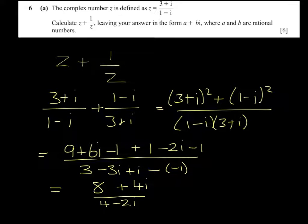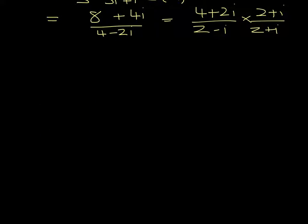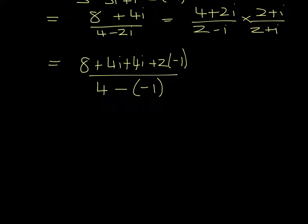Now I'm going to divide everything through by 2 firstly, and then we need to multiply by the conjugate so that we don't have a complex number on the bottom. So the top line becomes 8 plus 4i plus 4i plus 2i squared, and the bottom line becomes 4 take away i squared. So we have 8 take away 2, which is 6 plus 8i all over 5.